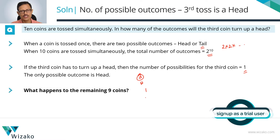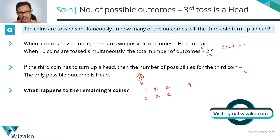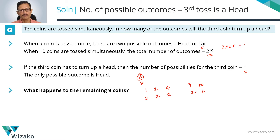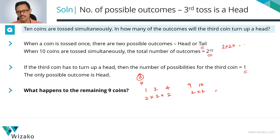Let's look at the first coin — it's got two outcomes, it could turn out to be a head or a tail. The second one could turn out to be a head or a tail. The fourth one could turn out to be a head or a tail, and so on all the way up to the ninth and the tenth coin. So you'll have two outcomes for the first, two for the second, two for the fourth, all the way down to two for the tenth — that's two times two times two multiplied nine times over, giving us 2 raised to the power of 9.